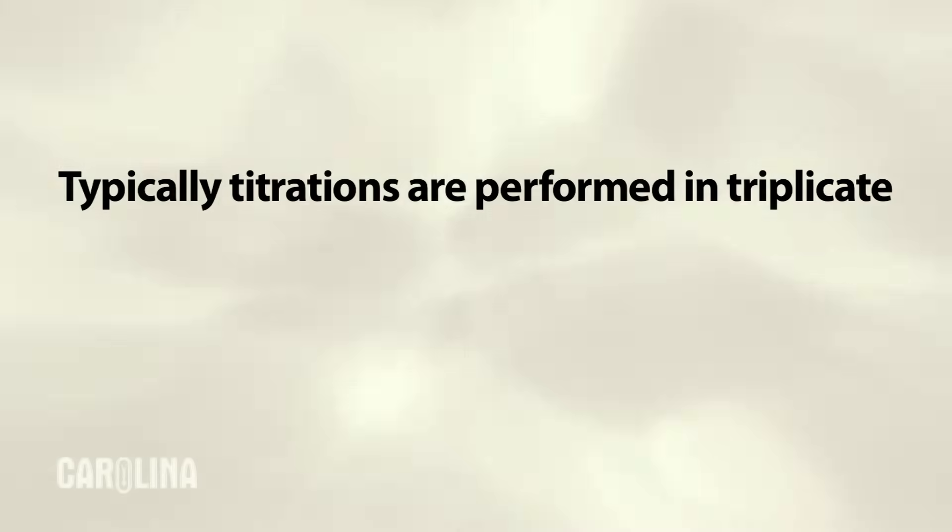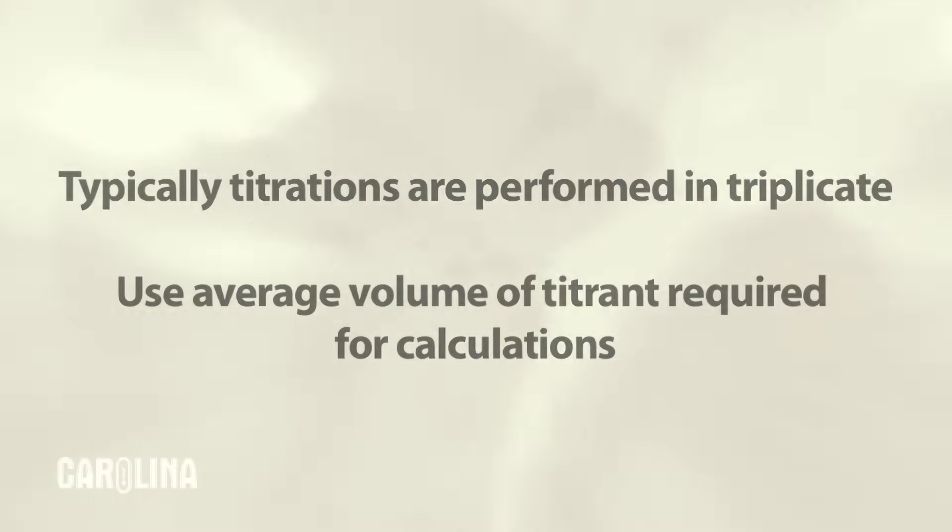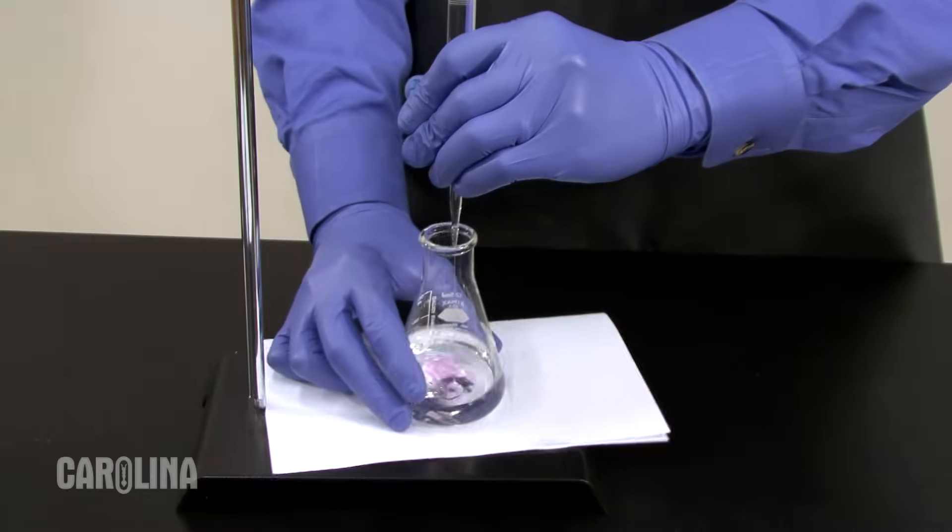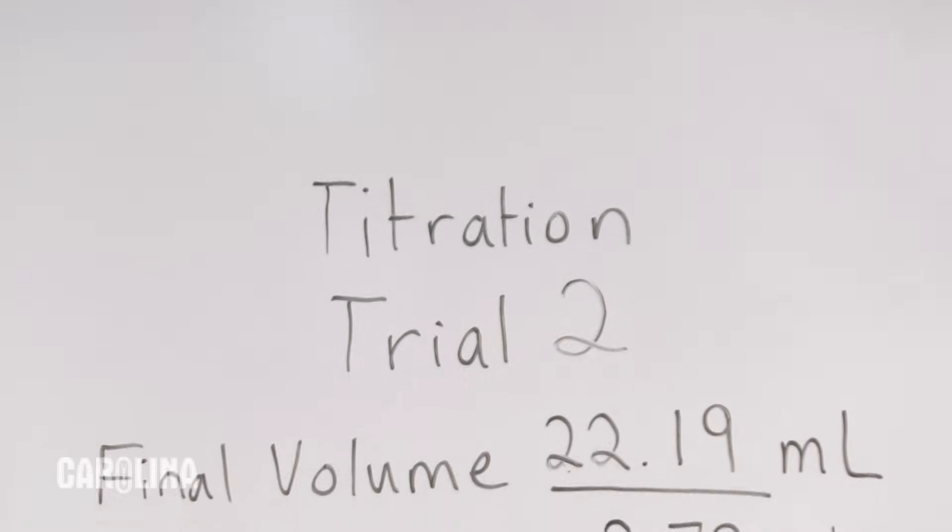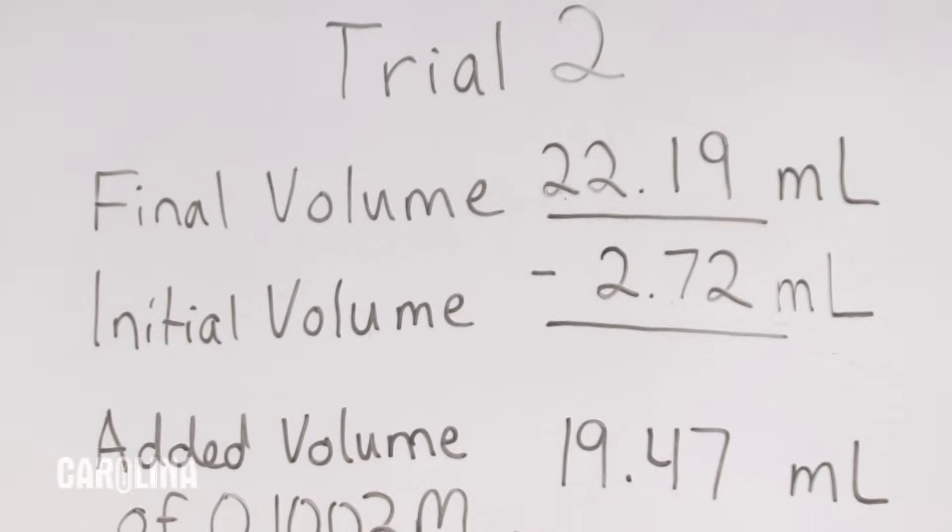Typically, titrations are performed in triplicate. Use the average volume of the titrant required to reach the endpoint for any calculations. Perform an estimate titration. Record your final volume, subtract your initial volume, and determine your number of added milliliters of base.